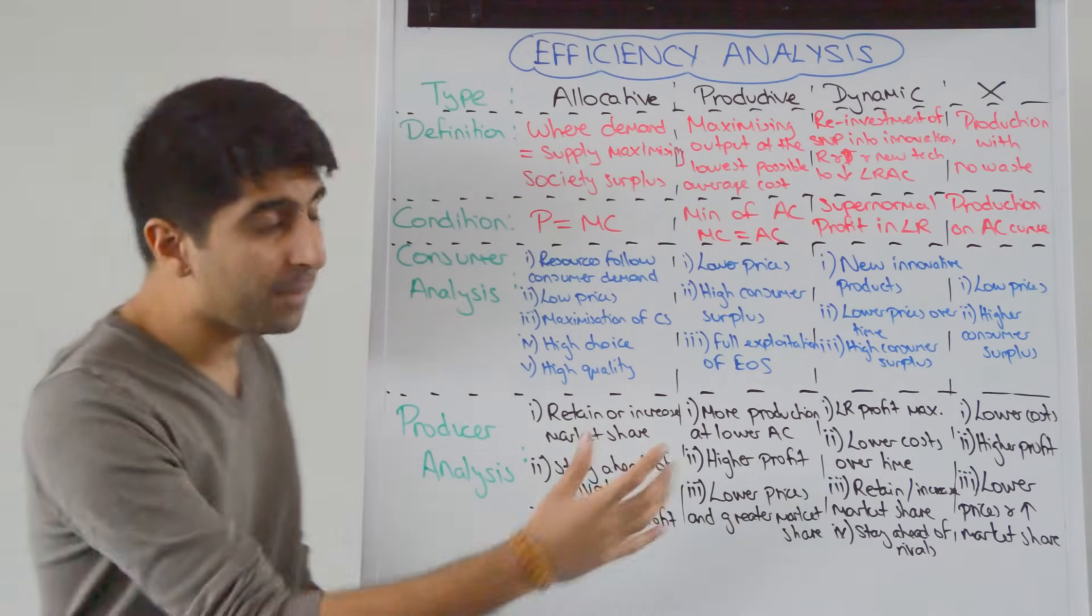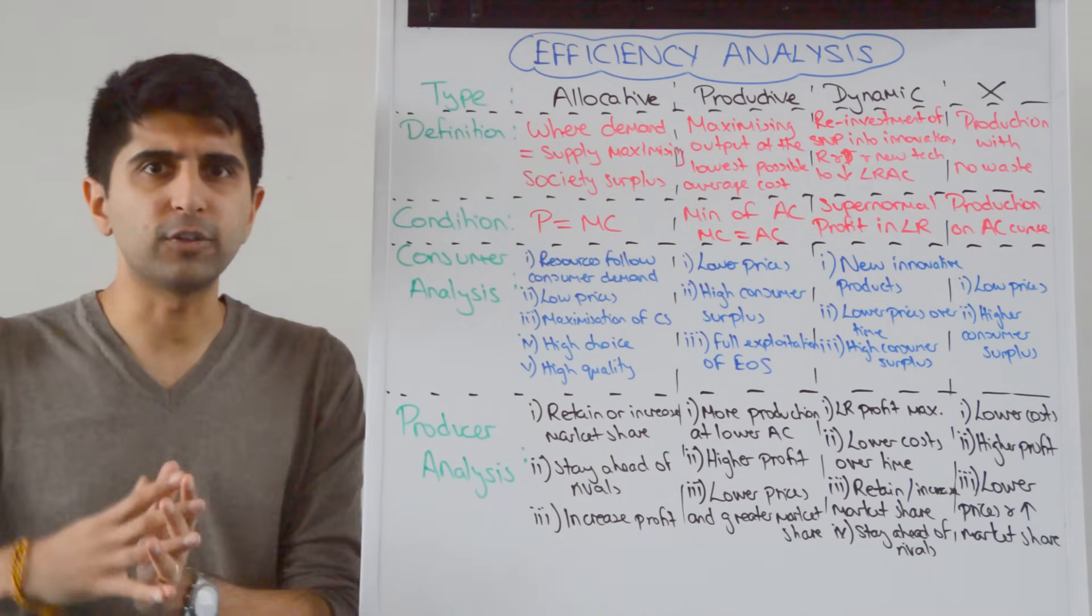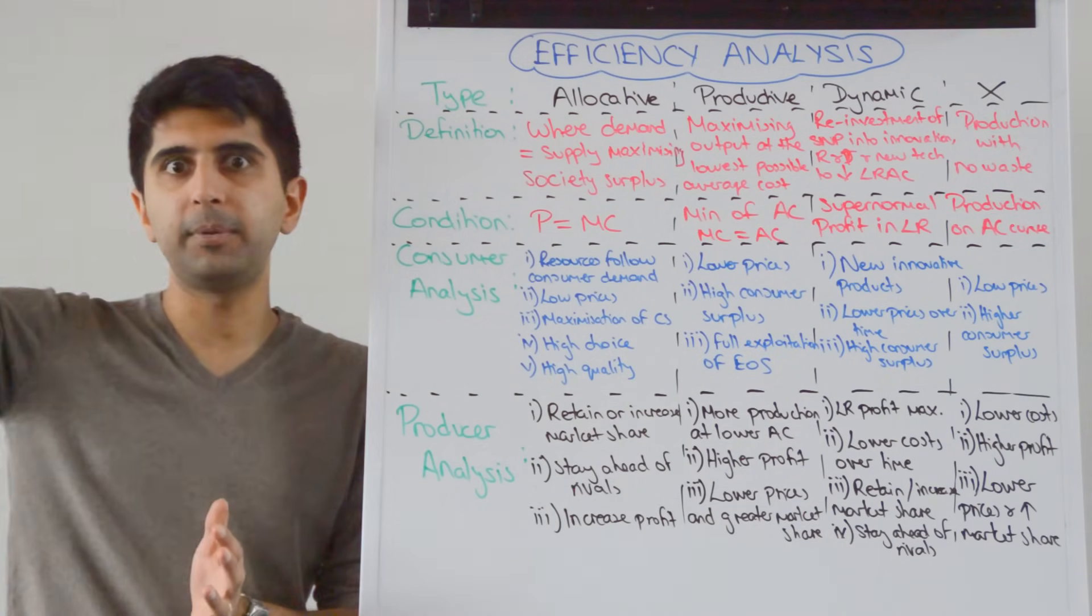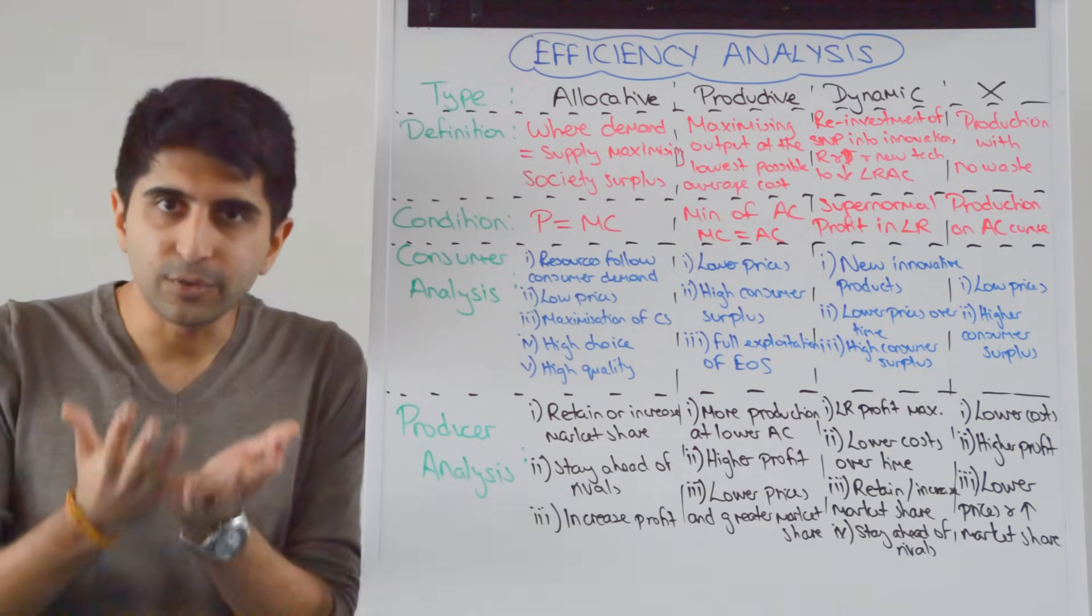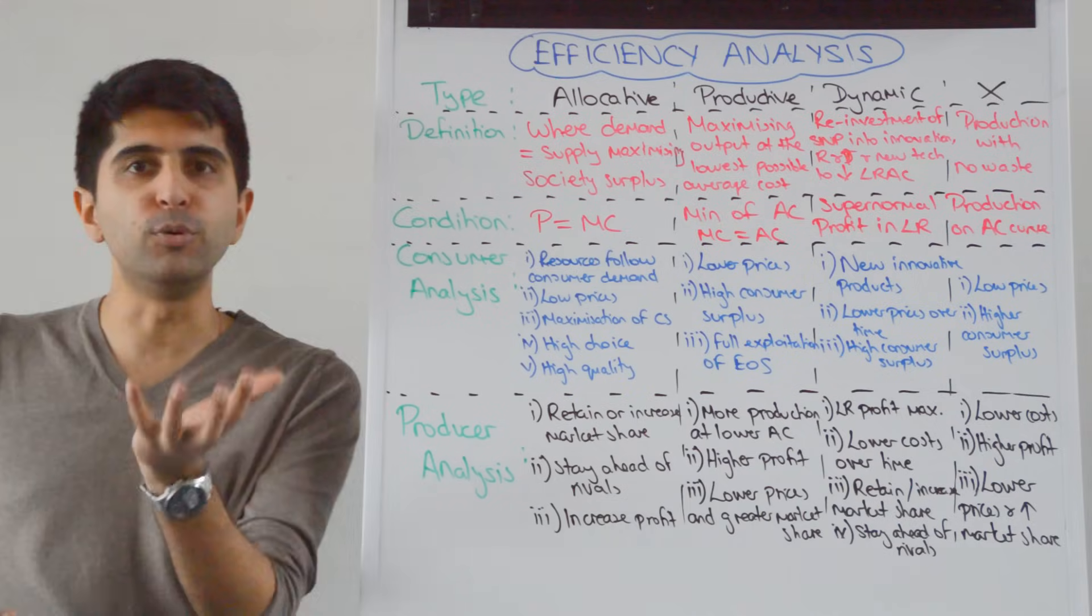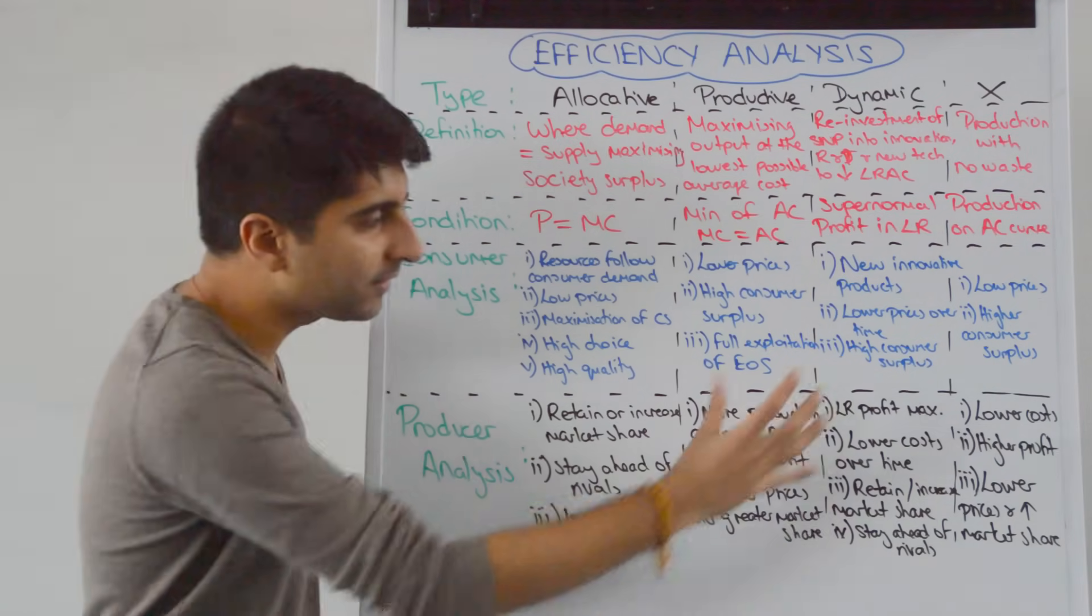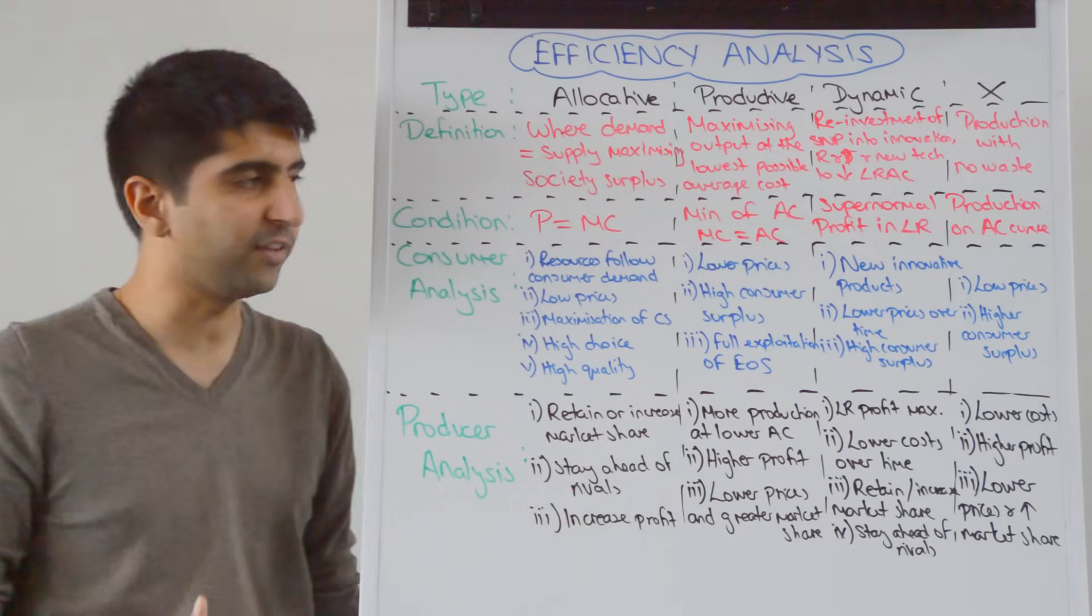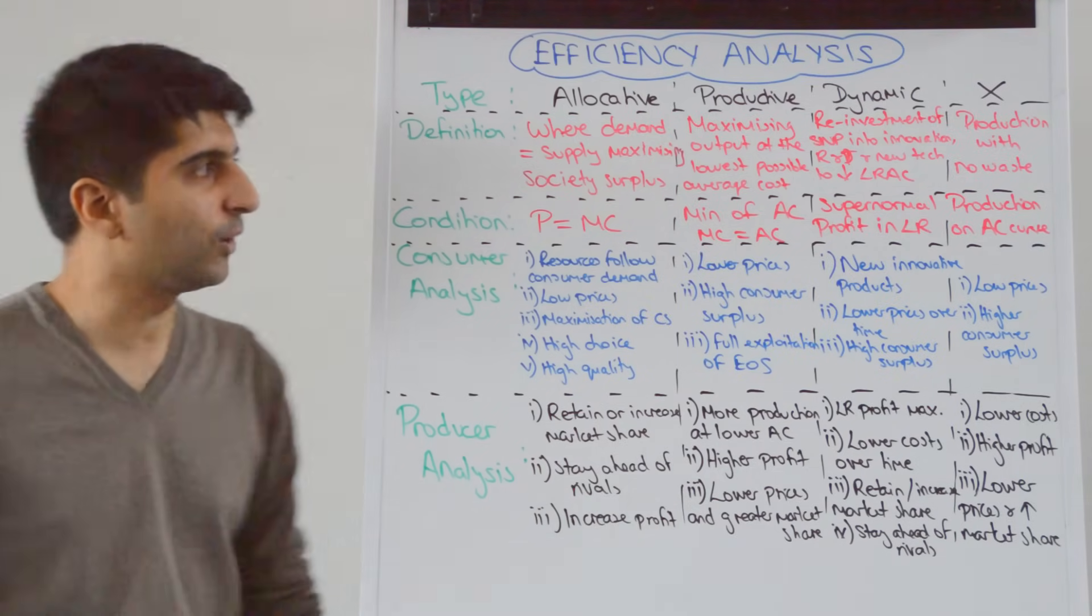As a way maybe to gain patents, copyrights or licenses, which prevents competition copying you and allows you to get ahead of rivals, to create monopoly power and to really boost profits. So big incentives for companies to be dynamically efficient. That's why we see lots of it in the real world.